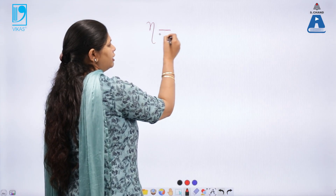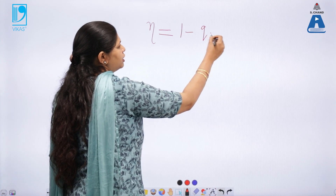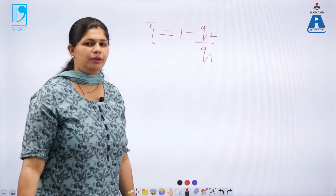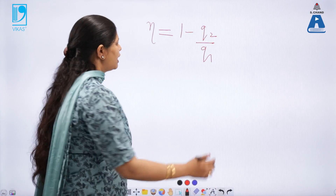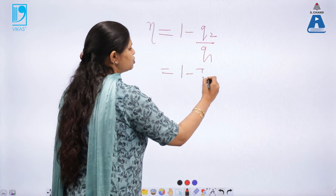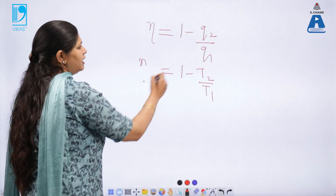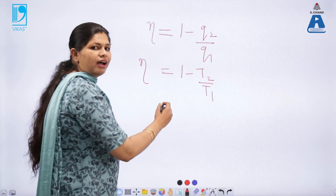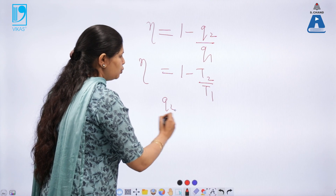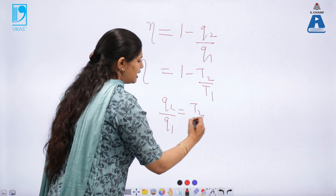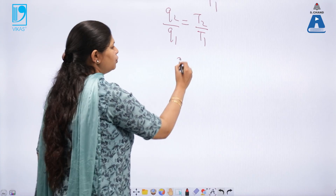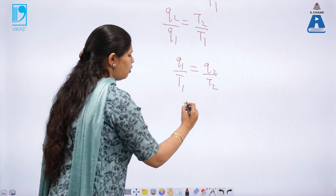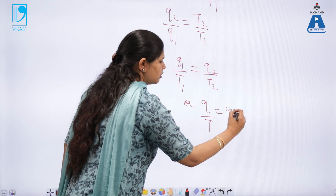The efficiency of the Carnot engine was found to be 1 minus Q2 by Q1, and we know from the first law that Q is directly proportional to the temperature of the reservoirs. So I can also write this as 1 minus T2 by T1. Equating Q1 with T1 and Q2 with T2, we find that Q2 by Q1 equals T2 by T1, or Q1 by T1 equals Q2 by T2, meaning Q by T comes out to be constant.